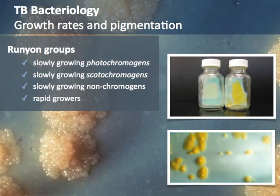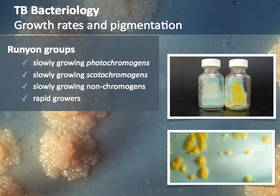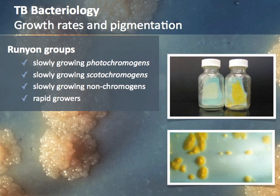In addition to growth rates, the pigmentation of mycobacteria is an important criterion for classification according to the Runyon scheme. There are three groups classified according to pigmentation, known as photochromogens, scotochromogens, and non-chromogens. Photochromogens are those mycobacteria that produce pigment only following exposure to light. Scotochromogens produce pigment regardless of exposure to light. Non-chromogens such as Mycobacterium tuberculosis do not produce any pigment.